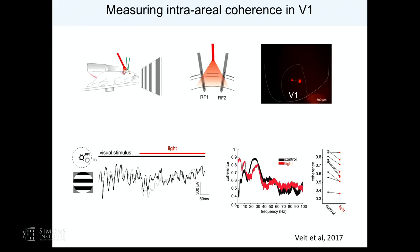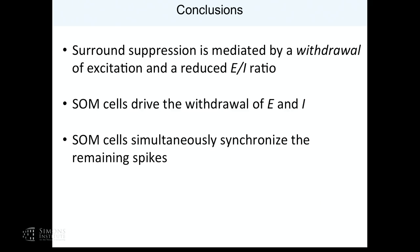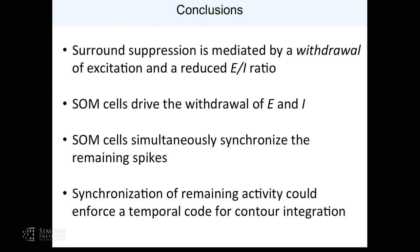To conclude part one: surround suppression is mediated by withdrawal of excitation and inhibition. Somatostatin cells drive suppression by withdrawing E and I — by suppressing the entire network — and they synchronize the remaining spikes, which may be a mechanism for temporal coding of extended contours. That's clearly a contentious hypothesis. With targeted manipulations of somatostatin cells in the future, you might ask whether this synchronization is actually good for sensory perception.